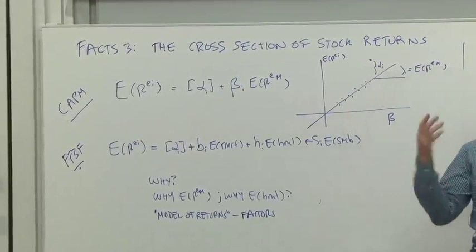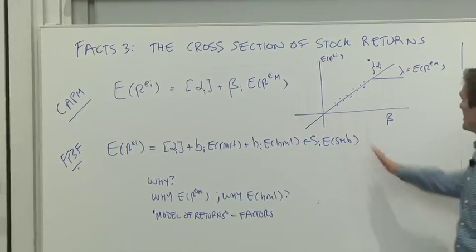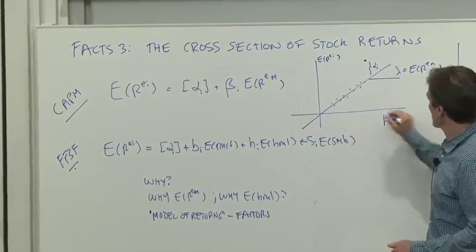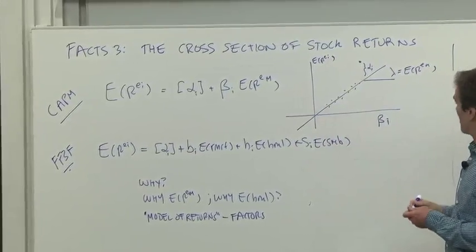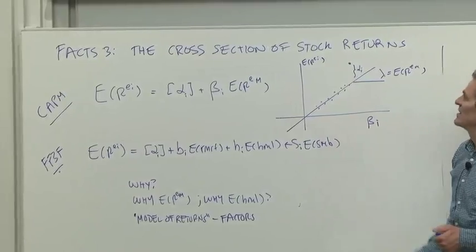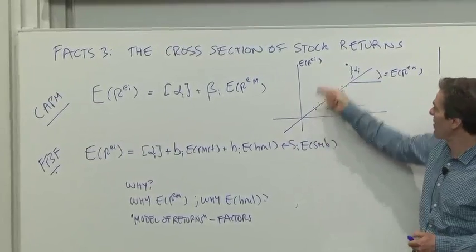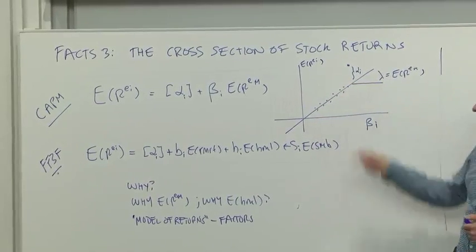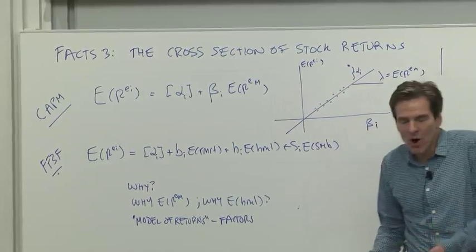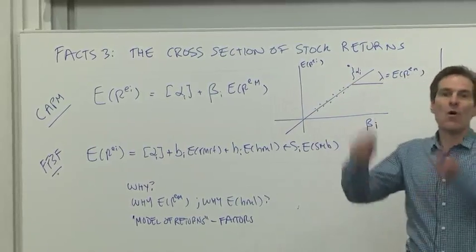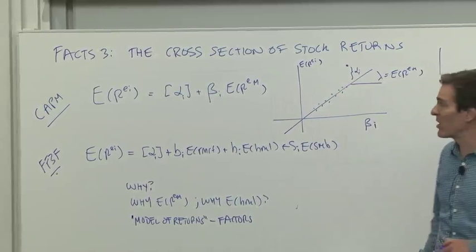So the way the world should work, according to this theory, is if we put expected returns on the vertical axis and betas on the horizontal axis, that the stocks with higher average return should have higher beta. When the market goes up and down, they should go up and down more. And that's a fairly simple concept to see.